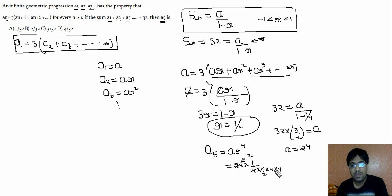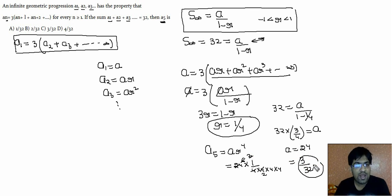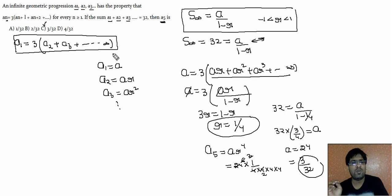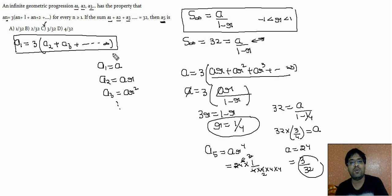Simplifying: 24 divided by 256 equals 3/32. So the answer is option C, which is 3/32. This is a basic but important question of infinite geometrical progression — every year questions come from this section. Understand the core approach: S_infinity equals a divided by (1 minus r), and r must lie between minus 1 and 1.